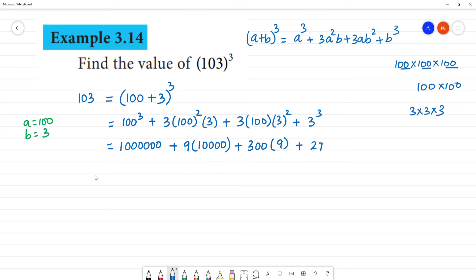Therefore, 1,000,000 plus 90,000 with 4 zeros, plus 2,700, plus 27. Adding these: 1,092,727.